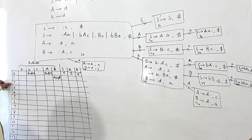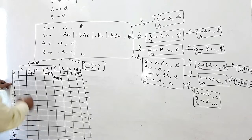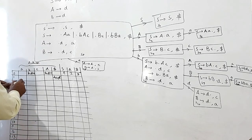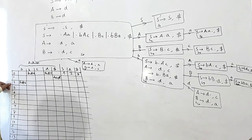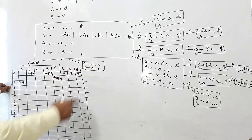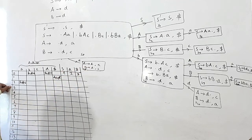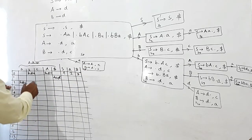In state 2, if I read small a I am reaching state 6, so I write shift 6. In state 3, if I read small c I am reaching state 7, so I write shift 7.